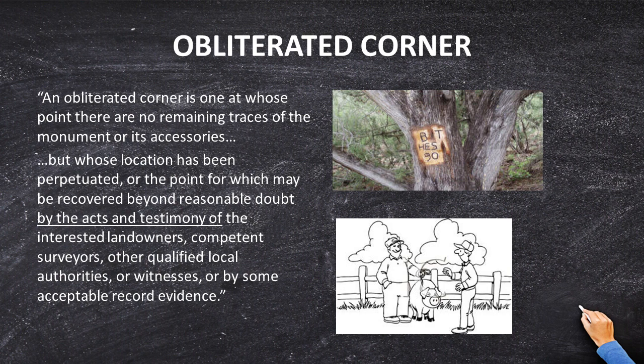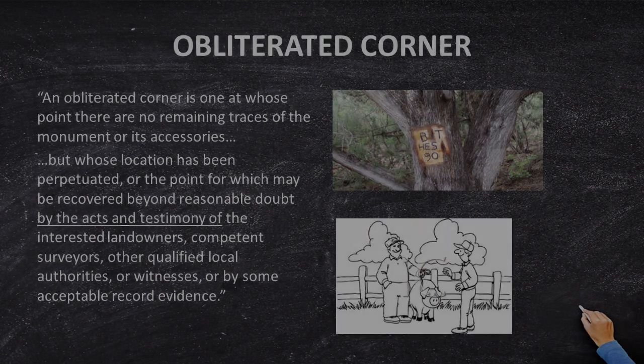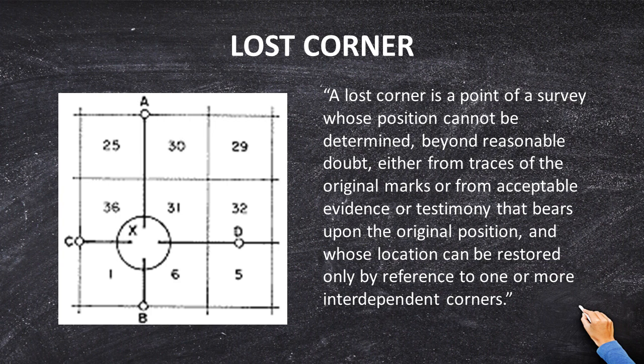The BLM manual defines an obliterated corner as one at whose point there are no remaining monuments or accessories, but whose location may be perpetuated by acts or testimony. Do we have any people — like a landowner, previous surveyors, or local authorities — telling us where this corner is? Is there anyone in this situation who is going to testify to the location of this corner? No. So this is not an obliterated corner.